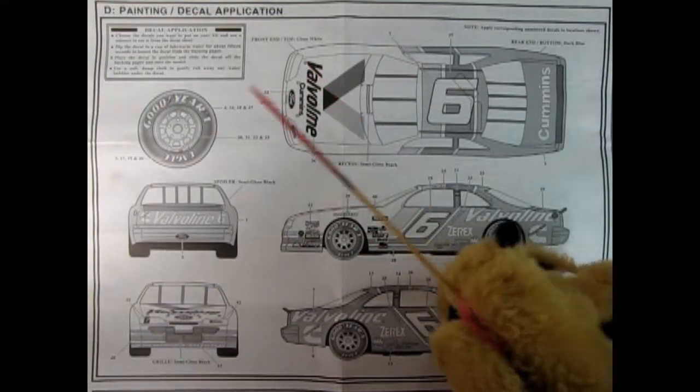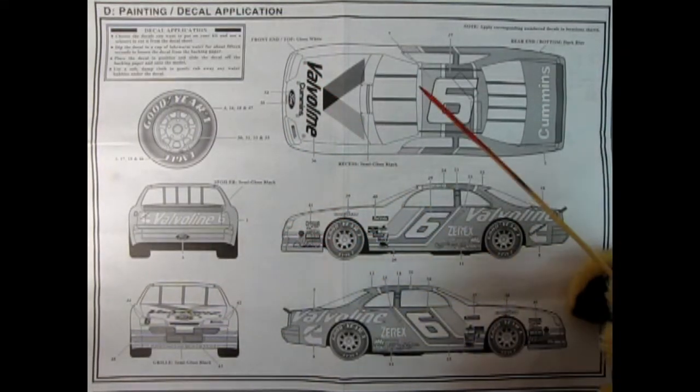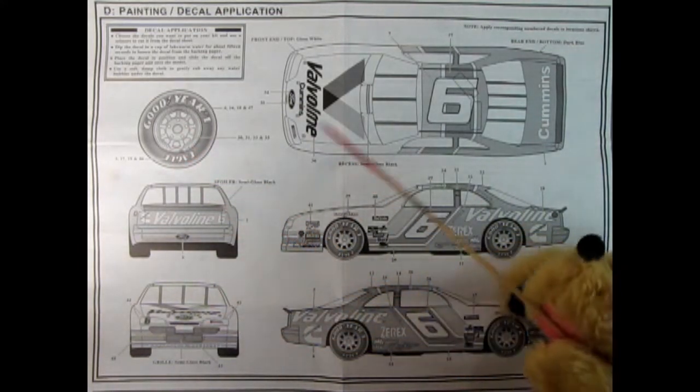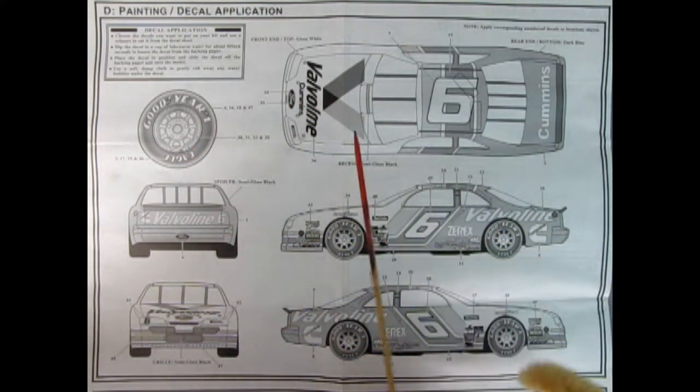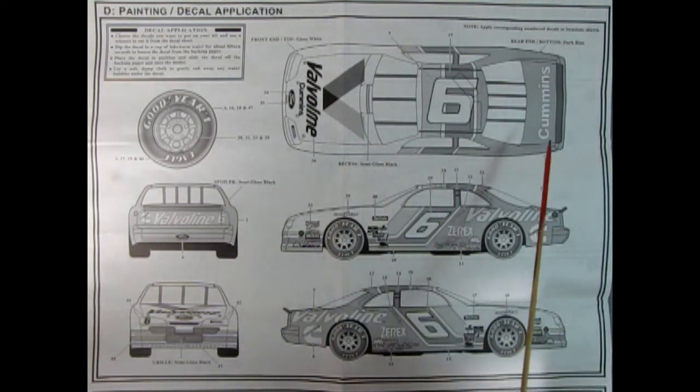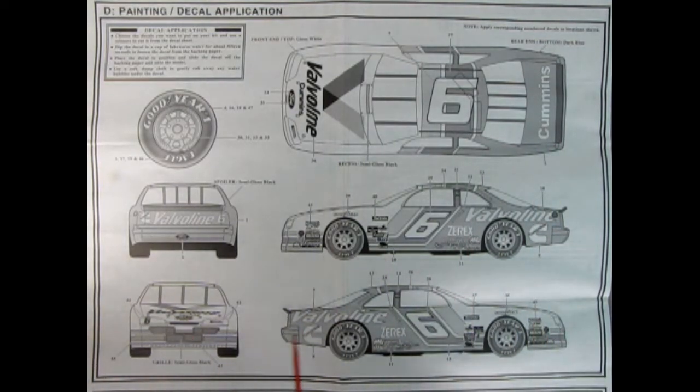Now this panel here really takes up a lot of the instruction sheet and as you can see we've got our tires and how to paint them and then all the decal placements. So just I'm going to back up a bit and you can just check this out. There's the one for the hood and the number six and then our Cummings on the back here and the Valvoline decal. This is really good. So when I show you the decals at the end of the video you're really going to love them.